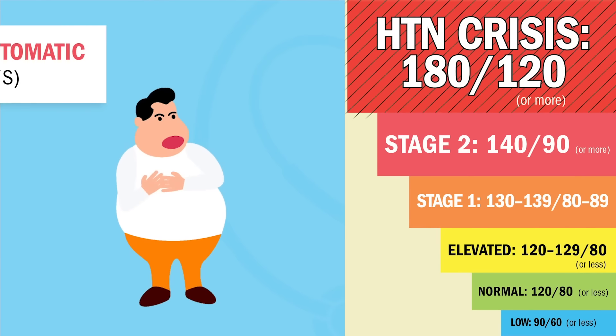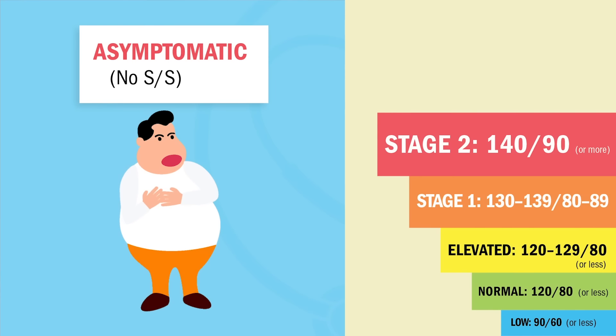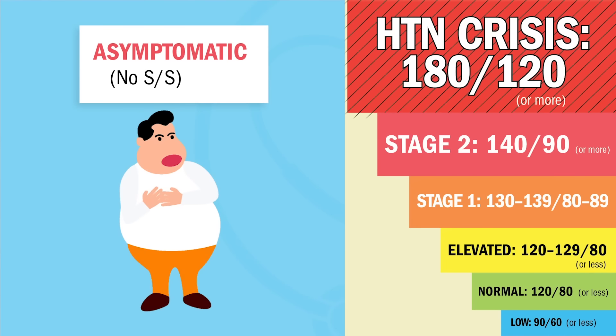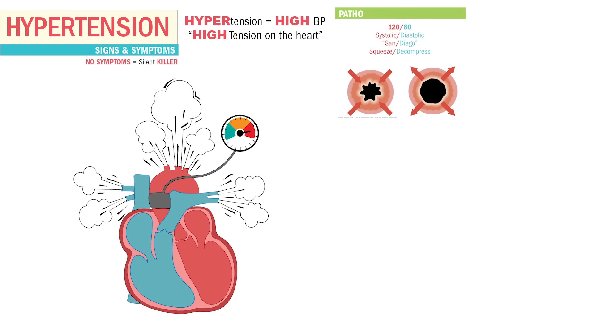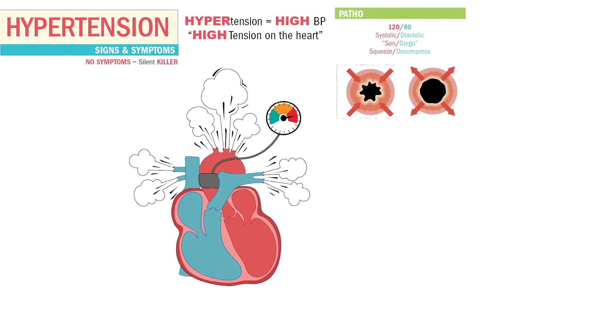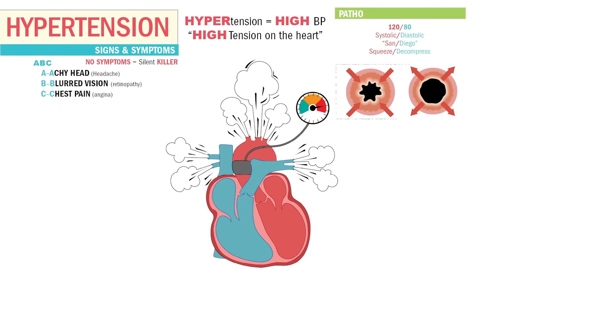Hypertension usually doesn't cause any signs or symptoms. Since it creeps up over time, we call this the silent killer. If there are signs and symptoms, the three most common on select all that apply questions and even on the NCLEX use the acronym ABC. A stands for achy head or headache, which can lead to a CVA stroke. B stands for blurred vision, also called retinopathy. And C stands for chest pain, which can indicate a heart attack.